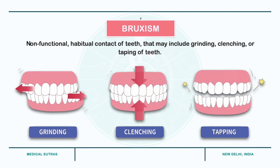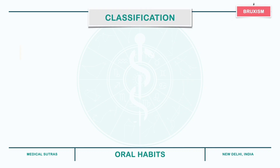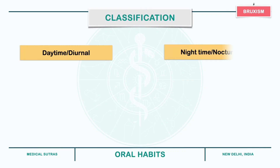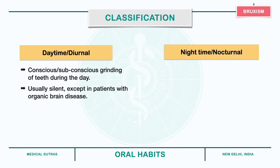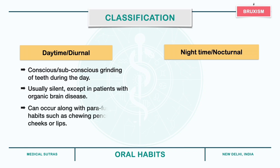It can be classified as daytime or diurnal and nighttime or nocturnal bruxism. Daytime bruxism refers to the conscious or subconscious grinding of teeth during the day. It is usually silent except in patients with organic brain disorders, and it can occur along with parafunctional habits such as chewing pencil, nails, cheeks or lips.